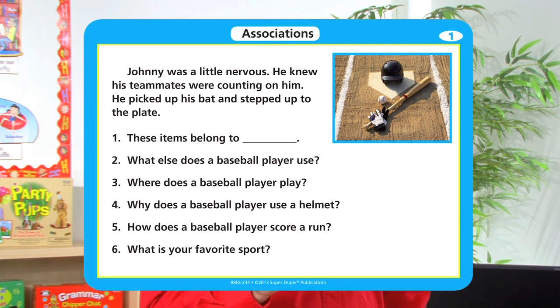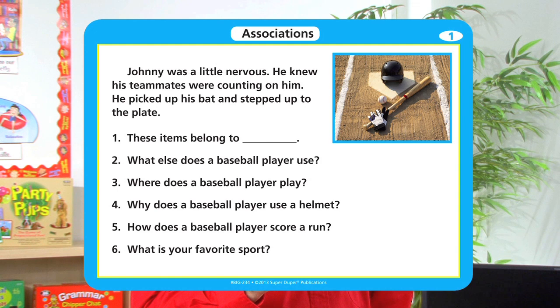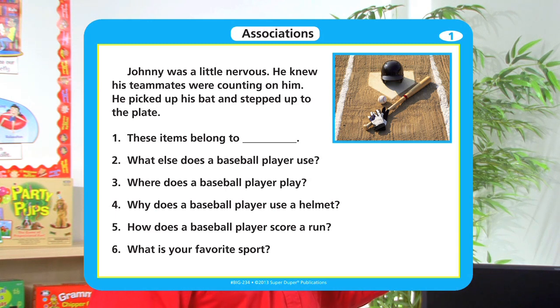For example: Johnny was a little nervous. He knew his teammates were counting on him. He picked up his bat and stepped up to the plate. Question two: What else does a baseball player use? Where does a baseball player play? Why does a baseball player use a helmet? And how does a baseball player score a run? The student provides answers based on their association to the story. Question six can open a general discussion about the student's opinions, feelings, or how they would handle the situation.